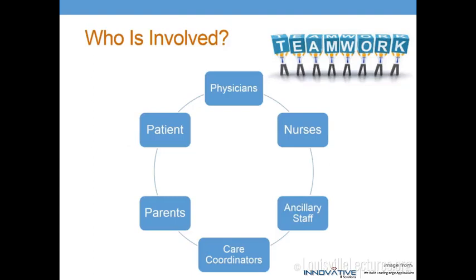Successful transition of care involves the entire medical team as well as family members. It's very important to identify each family member's role and to introduce the roles of ancillary staff. On the pediatric side, we actually have care coordinators — nurses who will physically take a patient from the pediatric clinic to the adult clinic on their first visit, sit with them, call them to make sure they have refills, and make sure their insurance has gone through when they're no longer covered by their parents.